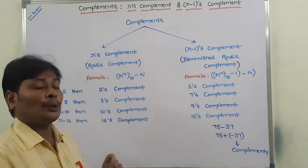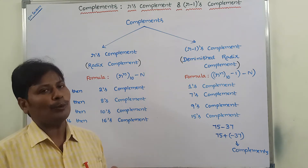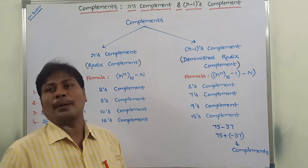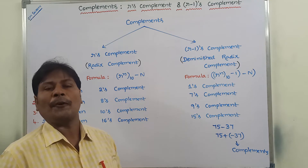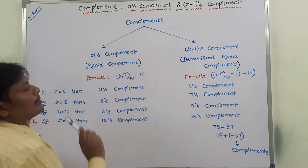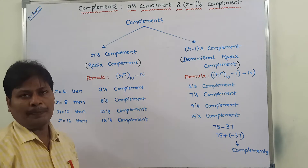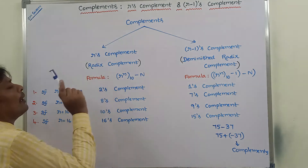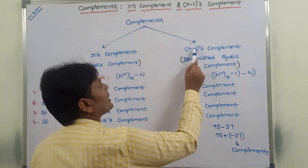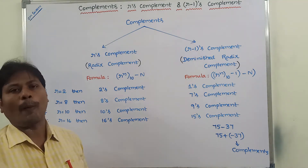Generally, two's complement is used for representing negative numbers. Now, we can take any number system. There are two types of complements available: first one is R's complement, and second one is R-1's complement. R's complement is called the Radix complement, whereas R-1's complement is called the Diminished Radix complement.